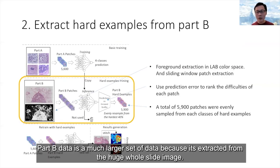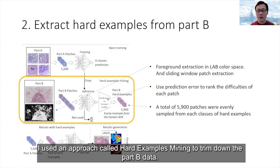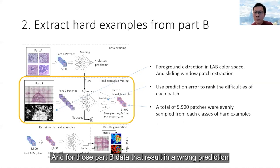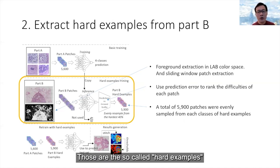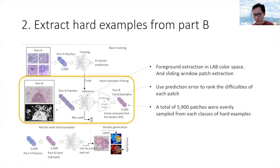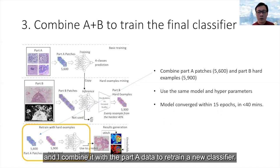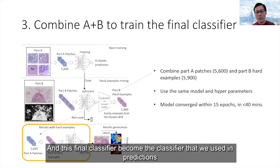The Part B data is a much larger dataset extracted from the huge whole-slide image. I used an approach called hard example mining to trim it down. I used the Part A classifier to classify Part B data, and the data that resulted in wrong predictions are exactly the hard examples we want to extract. To train the final classifier, I sampled 6,000 images from the hard examples and combined them with the Part A data to retrain a new classifier, which became the final classifier used for predictions.